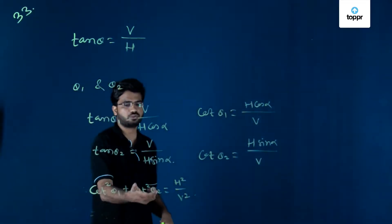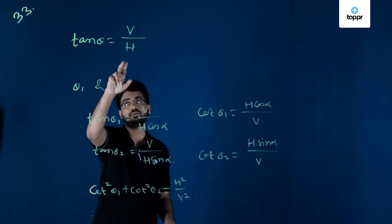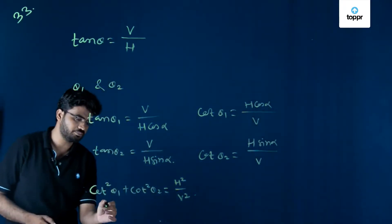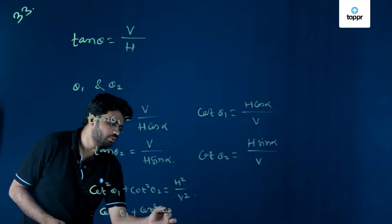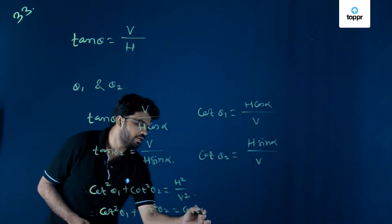So, cot square theta 1 plus cot square theta 2 is equal to H square by V square, and H square by V square is nothing but cot square theta. So, cot square theta 1 plus cot square theta 2 is equal to cot square theta.